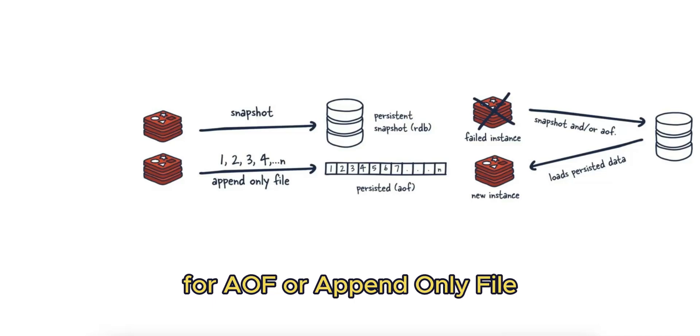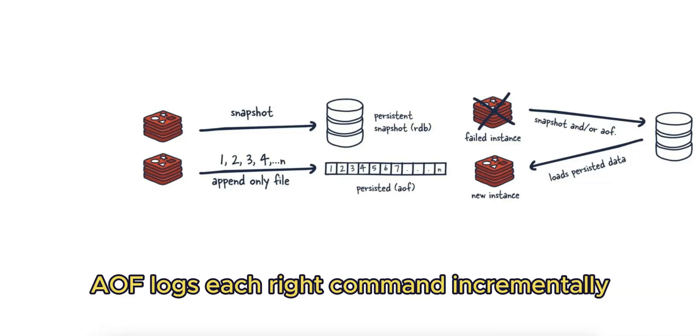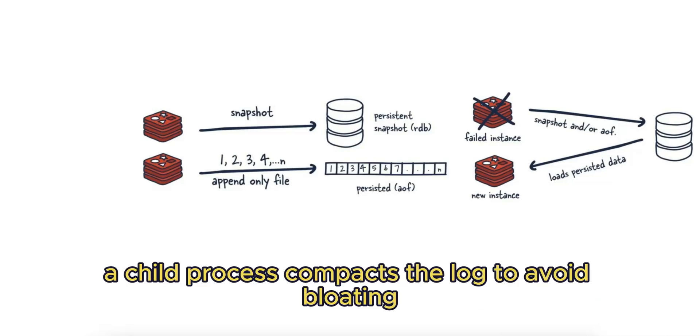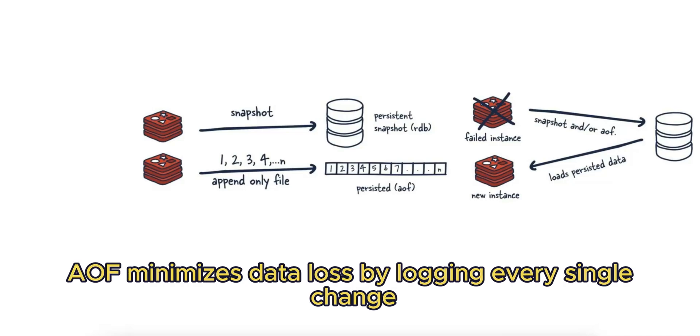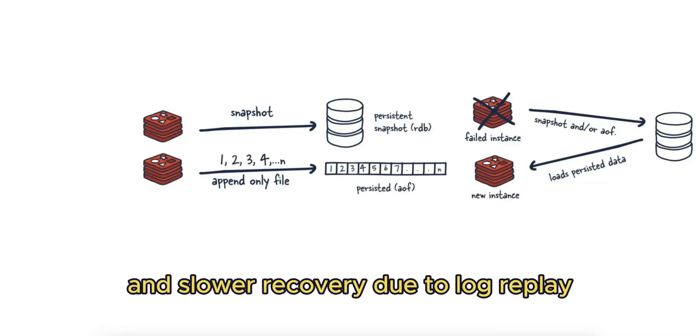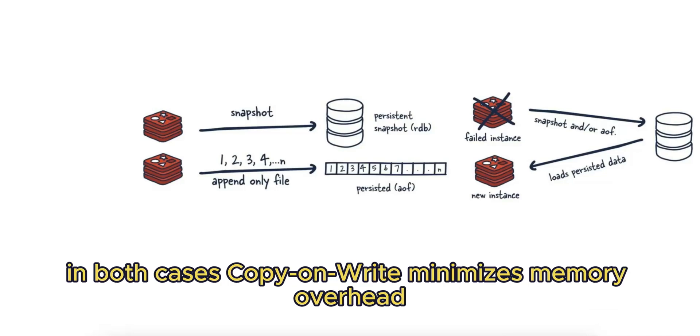For AOF (append-only file), AOF logs each write command incrementally, ensuring better durability. Periodically, a child process compacts the log to avoid bloating. AOF minimizes data loss by logging every single change, however AOF runs into the problem of larger file sizes and slower recovery due to log replay. In both cases, copy-on-write minimizes memory overhead.